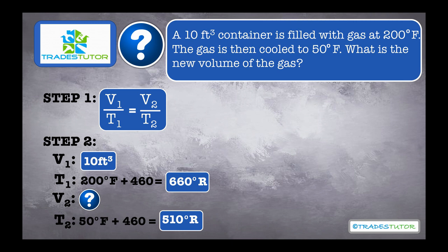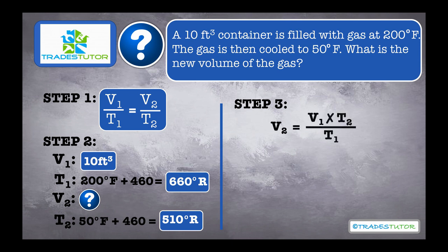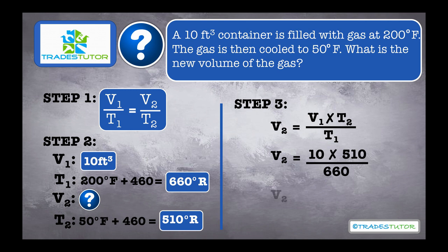That's the crucial step because now you have all the variables. In step 3, just plug it in. We do have to rearrange the formula to solve for V2, our final volume. That's equal to V1 times T2 over T1. So V1 is 10, T2 is 510, and T1 is 660. Plug the numbers into your calculator, and you get 7.73 cubic feet as the new volume — and that makes sense. The temperature of the gas went down, the volume went down.